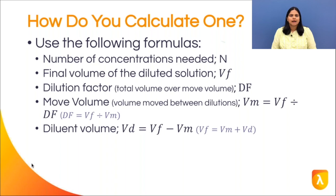The following factors are important to calculate a serial dilution: the number of concentrations needed (N), the final volume of the diluted solution (Vf), the dilution factor — which is calculated by dividing the final volume by the move volume — and the move volume (Vm), which is the volume of stock moved between dilutions. Diluent volume is calculated by subtracting the move volume from the final volume.